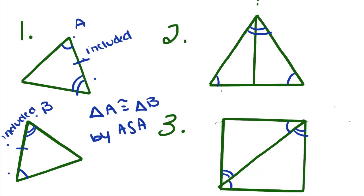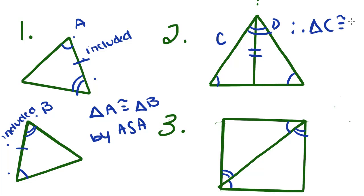Now we have this one. We know these two angles are congruent, and this angle is congruent to this angle. We don't know that any sides are congruent, but since these two triangles share this side, we can say that it's congruent to itself. So we have an angle, a non-included side, and another angle congruent to an angle, a non-included side, and another angle. Therefore, we'll call this C and this D — triangle C is congruent to triangle D by angle-angle-side.